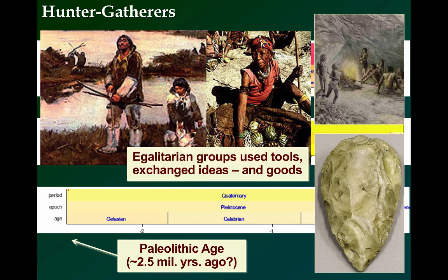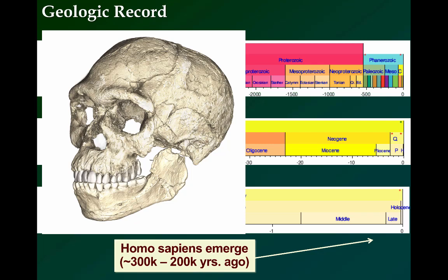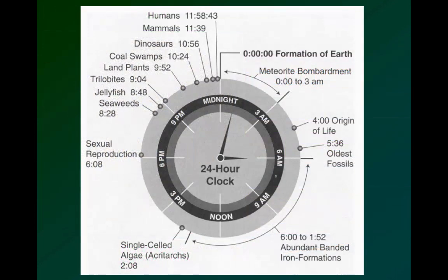And as early as 300,000 years ago, or as recent as 200,000 years ago, around eastern, southern, or perhaps even northern Africa, homo sapiens emerged, meaning consciously thinking man. To put history into perspective, if the age of the Earth was scaled down to a 24-hour period, humankind doesn't emerge until 11:58 p.m. plus 43 seconds — a mere 77 seconds until right now.